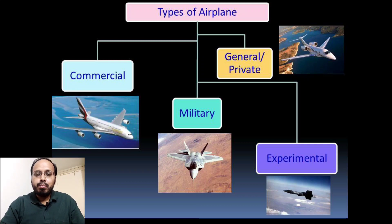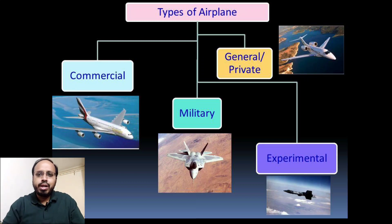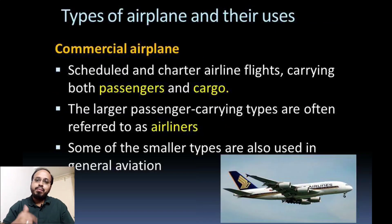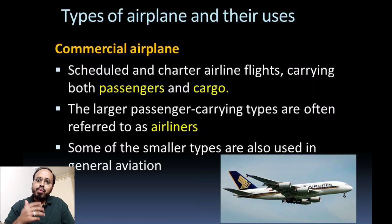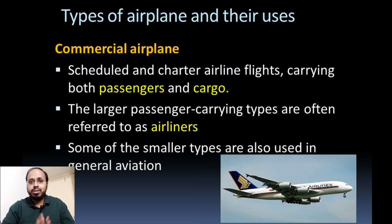There are different types of airplanes available. As shown in the pictures, there are commercial types, military types, general and private types, and experimental purpose types of airplanes. In the commercial category, these are scheduled and chartered airline flights carrying both passengers and cargo. The larger passenger-carrying types are often referred to as airliners, and some smaller types are also called general aviation.